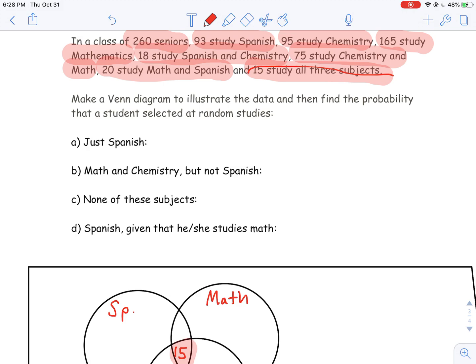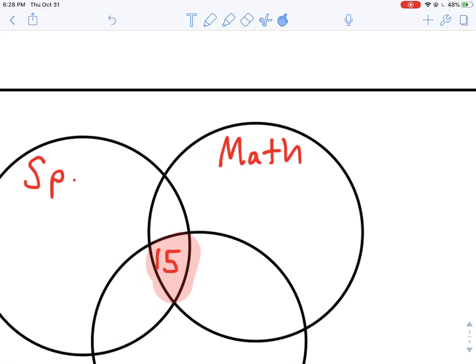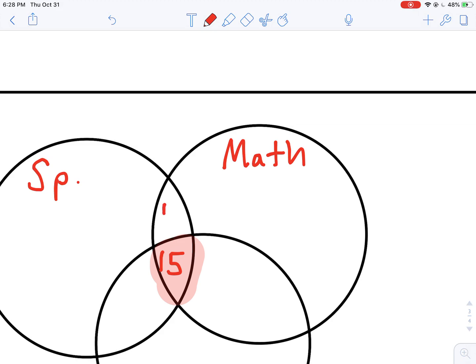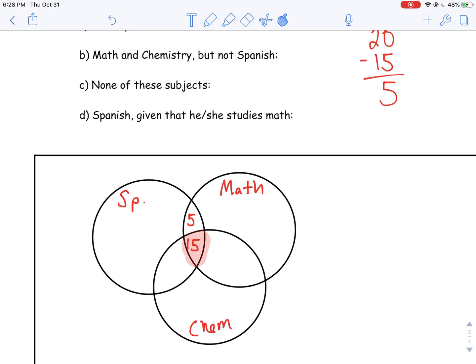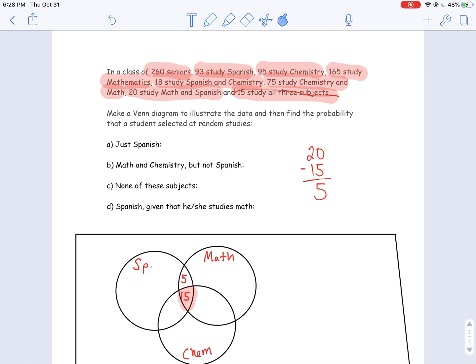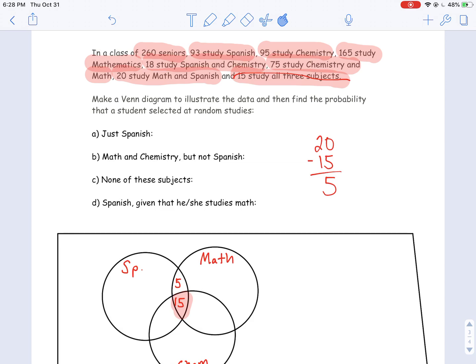Absolutely, because you'd be studying Math, Spanish, and Chemistry. So what I'm going to do is 20 minus 15, which gives me 5. And now what that gives me here is this represents the 20 who study Math and Spanish, and it also includes those who studied Math, Spanish, and Chemistry, all three of them. So I'm going to continue going here.